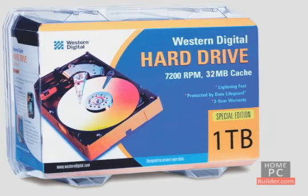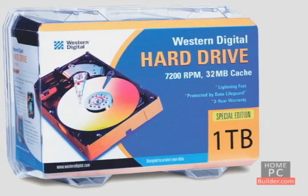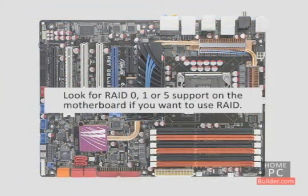So when you go to purchase your hard drive or drives, you're looking for at least a 1 TB drive capacity, a 7,200 RPM speed with at least 32 MB of cache, Serial ATA 2 or Serial ATA 3 support, and if you want to try RAID, look for your type of RAID support — 0, 1, or 5 — on the motherboard.